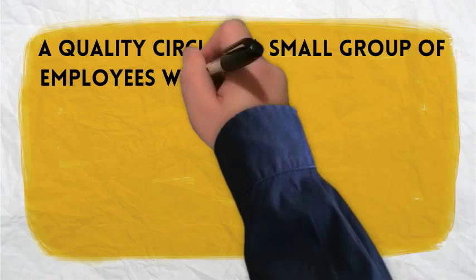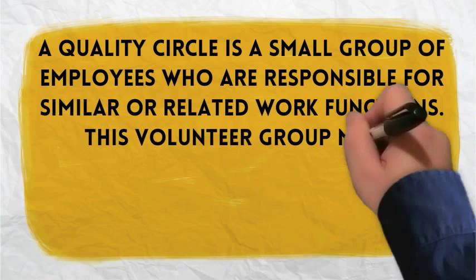A Quality Circle is a small group of employees who are responsible for similar or related work functions. This volunteer group meets regularly to identify, analyze, and solve quality and production problems related to its work.